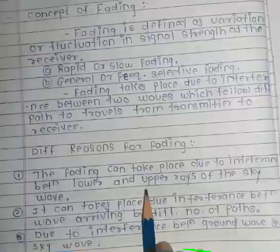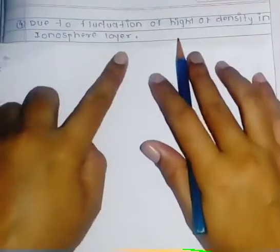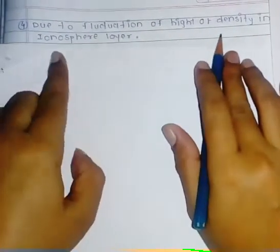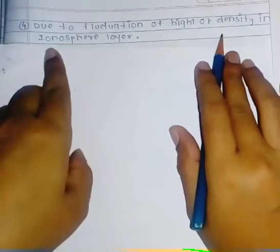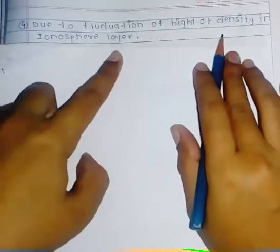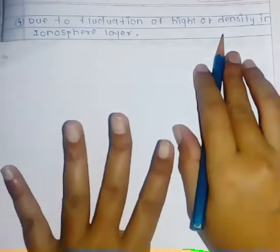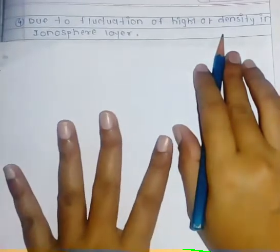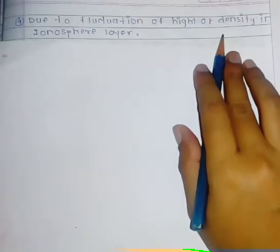The last reason for fading is due to the fluctuation of height or density in the ionosphere layer. If there is a fluctuation in the height and density of the ionosphere layer, then fading can also happen. These are the different reasons of fading.